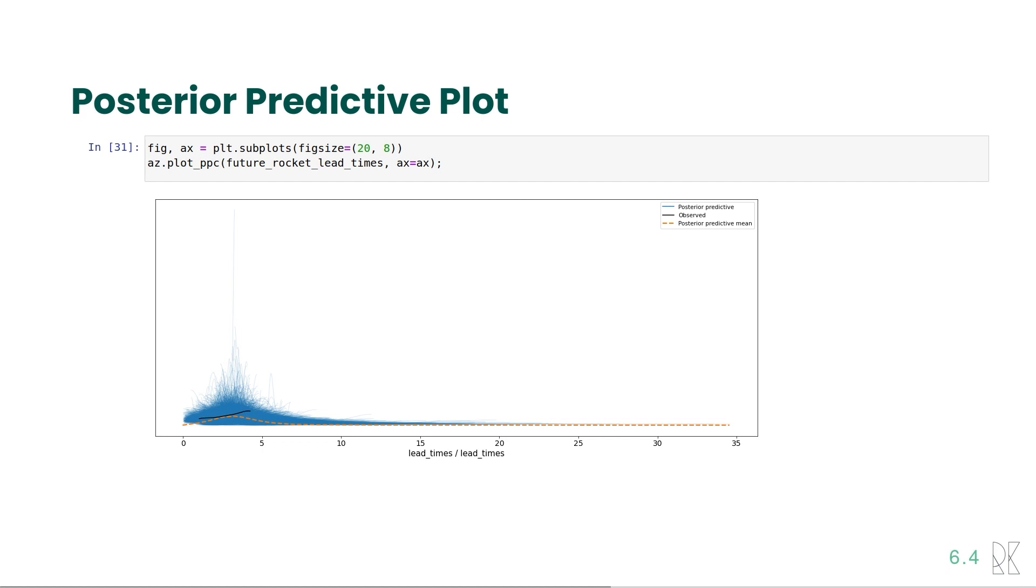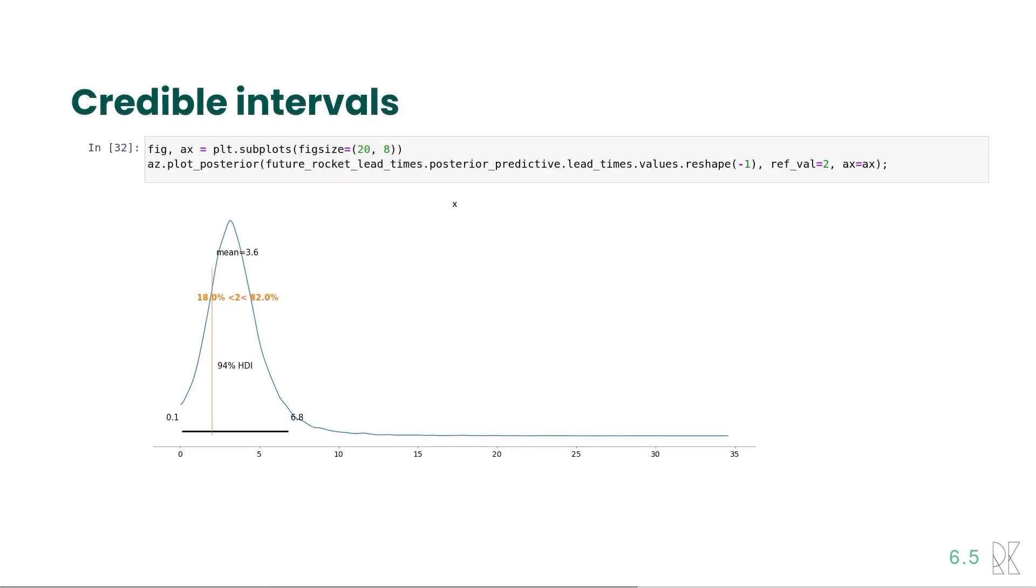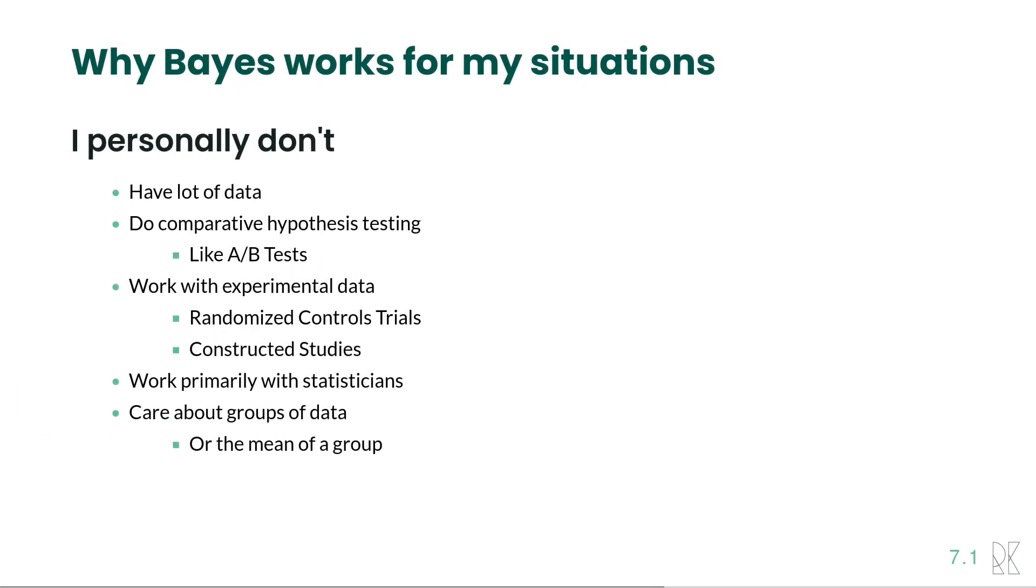So we can make this plot and get the credible interval and see what possible lead times may be. And in this case, the credible interval goes from close to 0 to 5.8, and the part is most likely going to be later than two days. Now, why does Bayes work for my situation in a rocket situation?